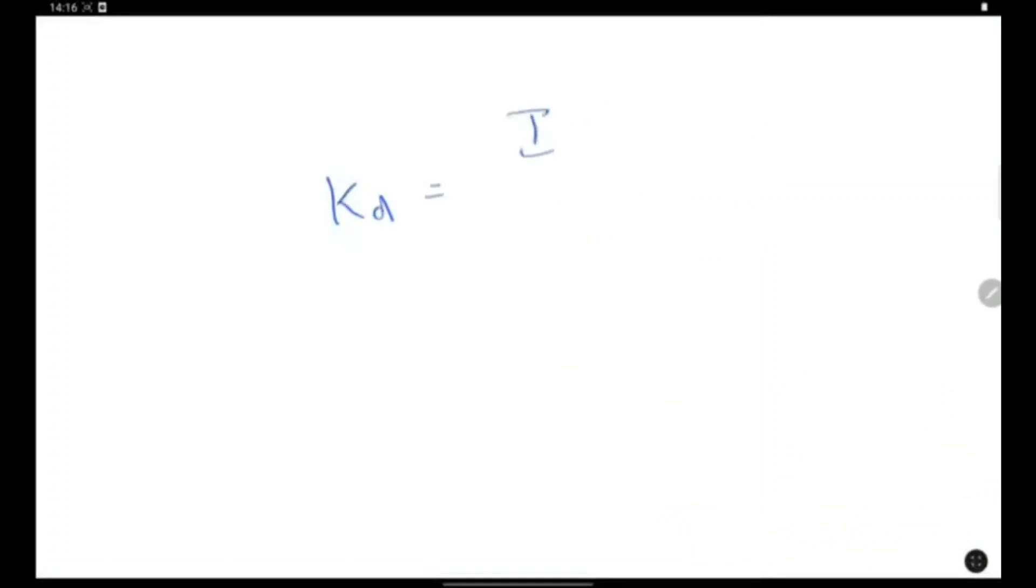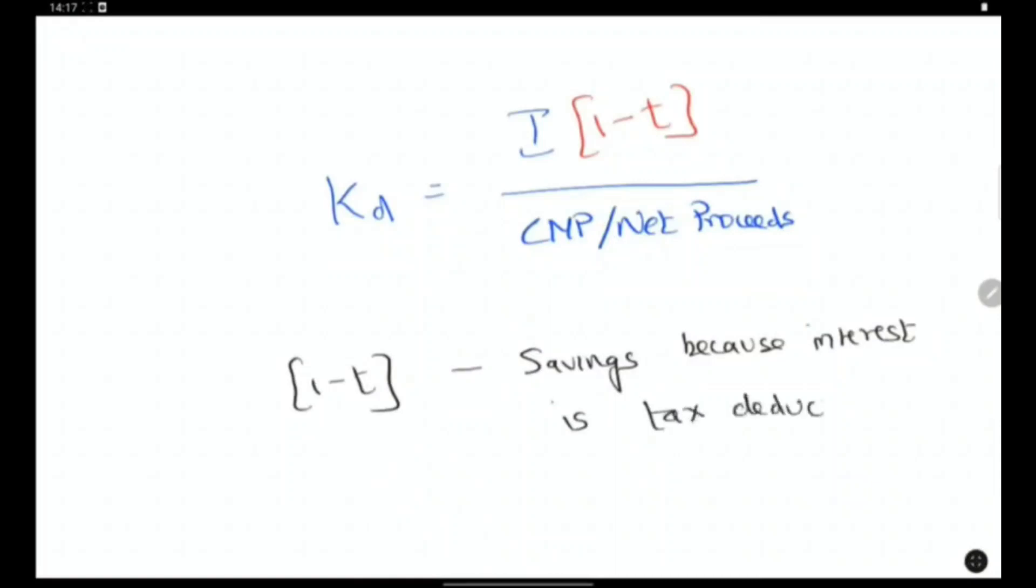Hence, the cost of debt or KD is calculated as interest into 1 minus tax divided by current market price or net proceeds where 1 minus tax stands for the savings because interest is tax deductible or what we call the tax shield.